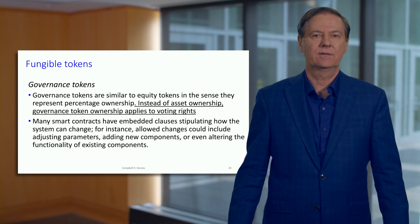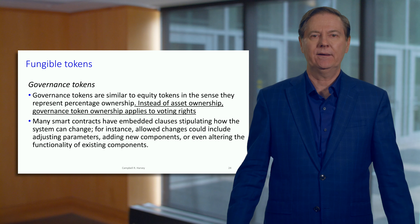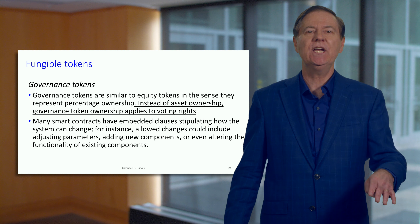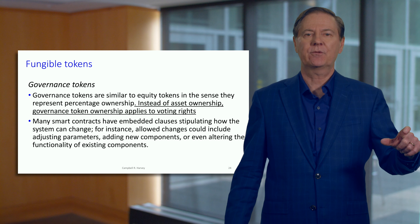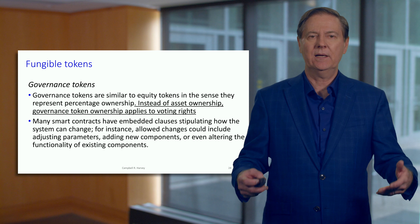The third type of token is a governance token — the third type of fungible token. In centralized finance, if you buy shares of IBM, you have voting rights at the annual general meeting. In decentralized finance, equity tokens represent a share of assets in the pool or smart contract. But there is another level of governance of that smart contract — the protocol may have a governance token.